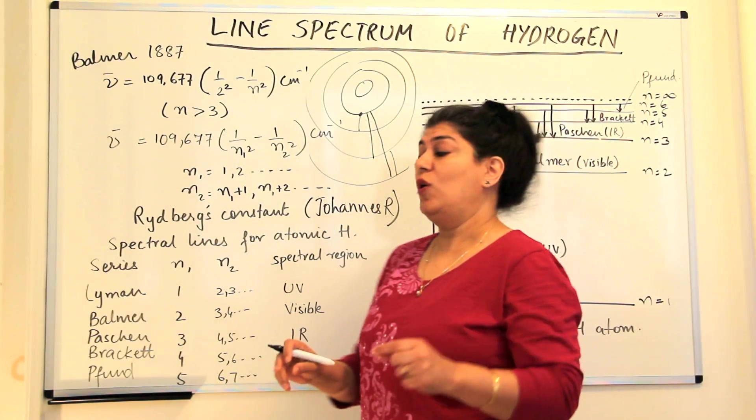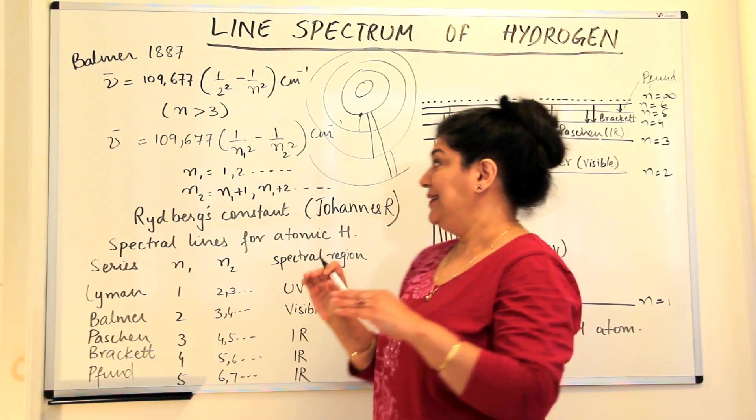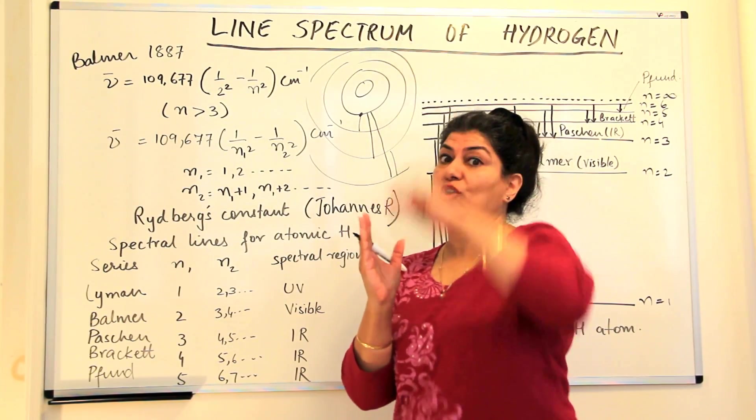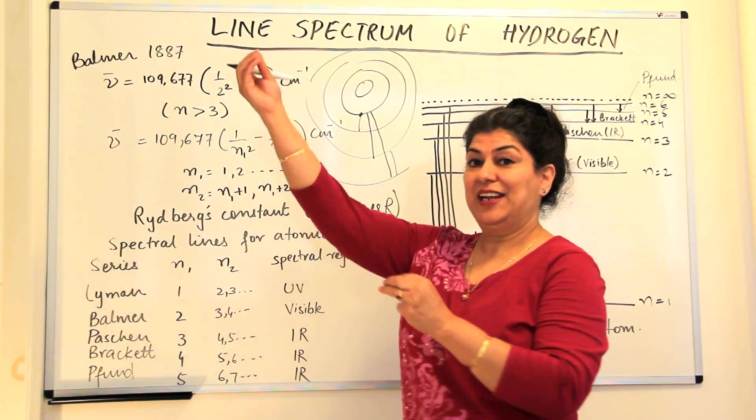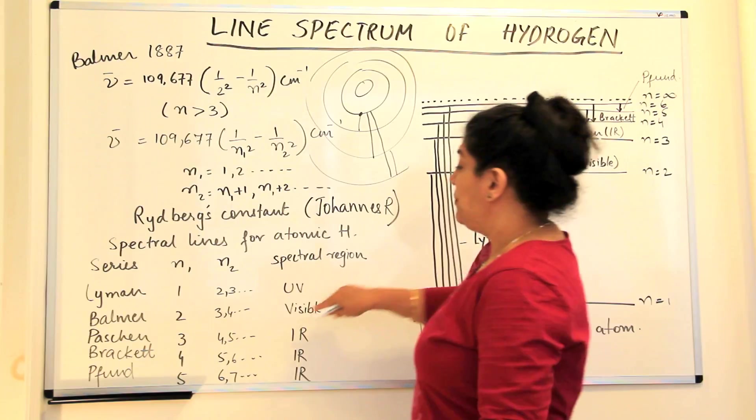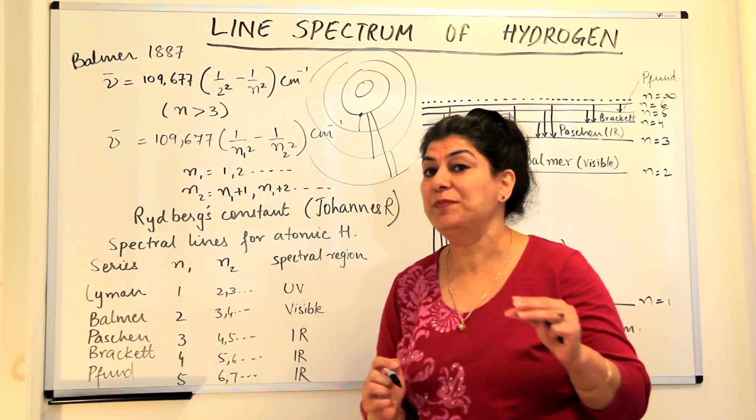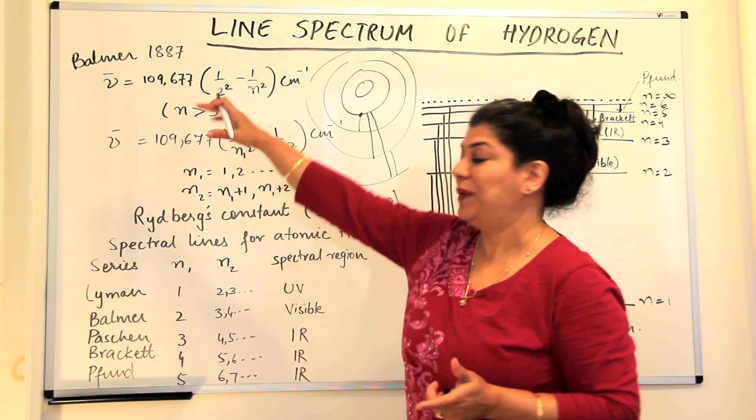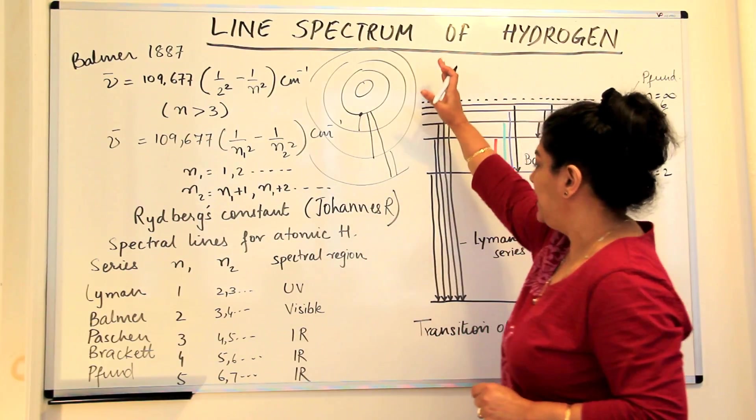The Balmer series was when the electron was initially at the second level, that is, it had already absorbed energy and it was there, then it absorbed more energy and went up to a higher level. When the electrons returned to the second level, they produced the Balmer series. Since the Balmer series is in the visible range, this is what was visible first. These were identified first by Balmer. The Lyman series fall in the ultraviolet region.